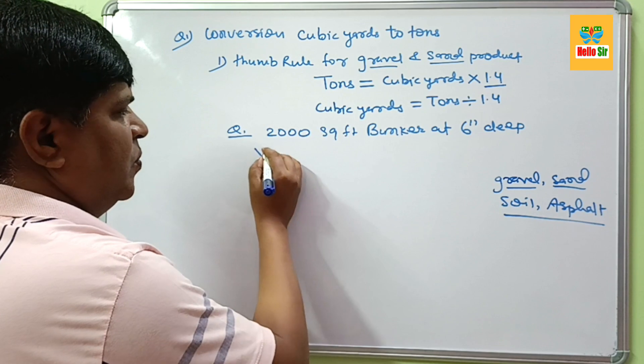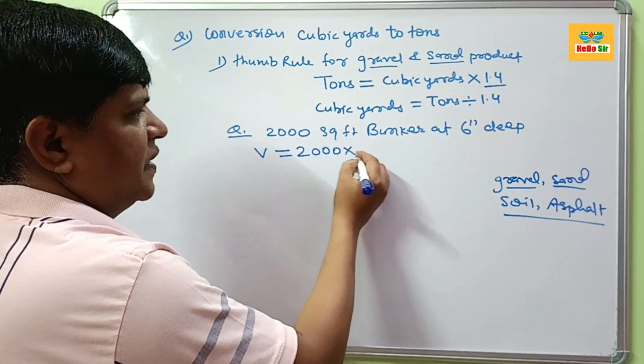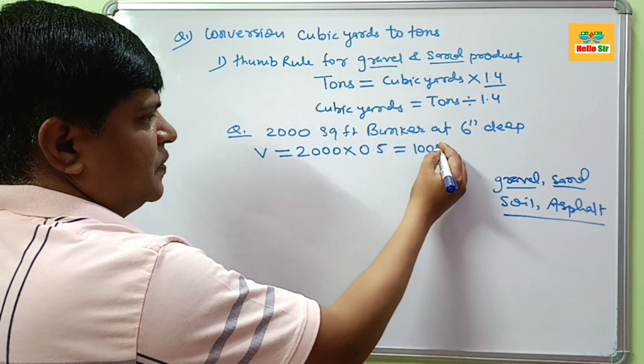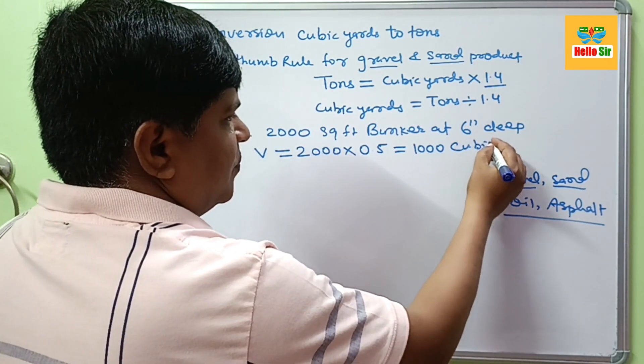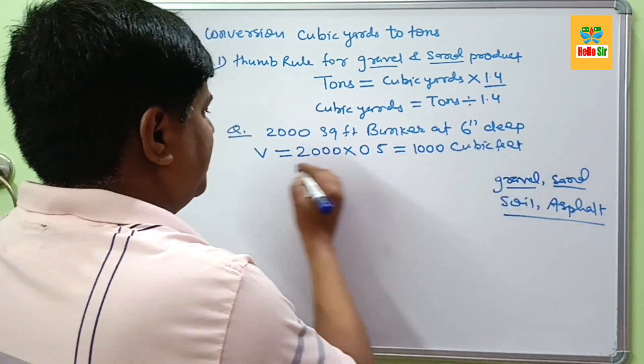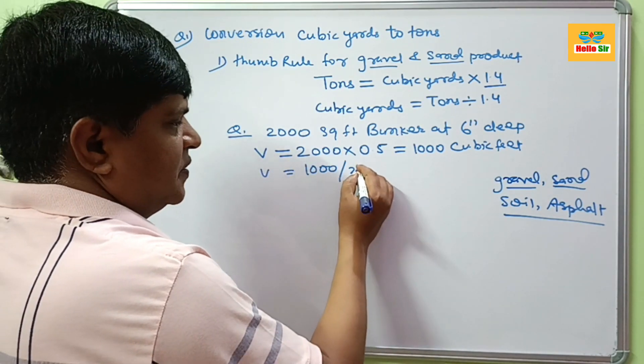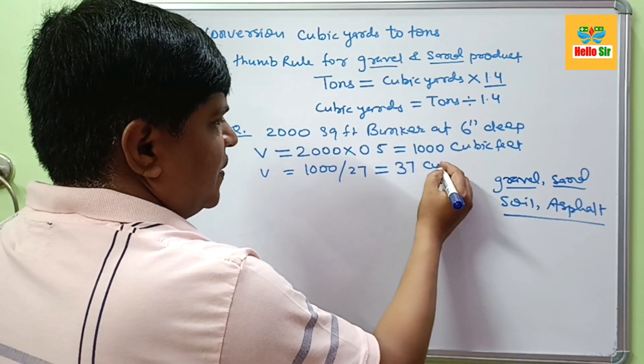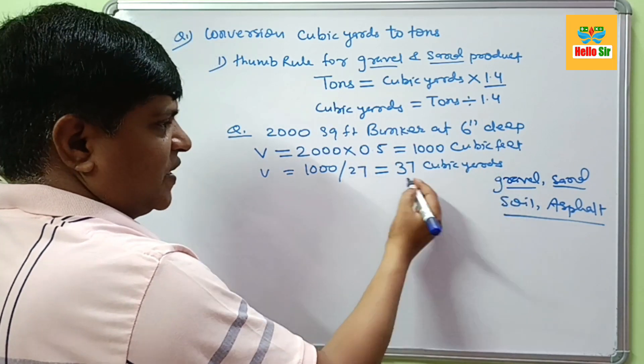First you find volume. Square foot, 2000 yards and 6 inch deep. This one is feet 0.5. This will come about 1000 cubic feet. And this cubic feet change into yards divided by 27. This will come about 37 cubic yards of sand will be required for this project.